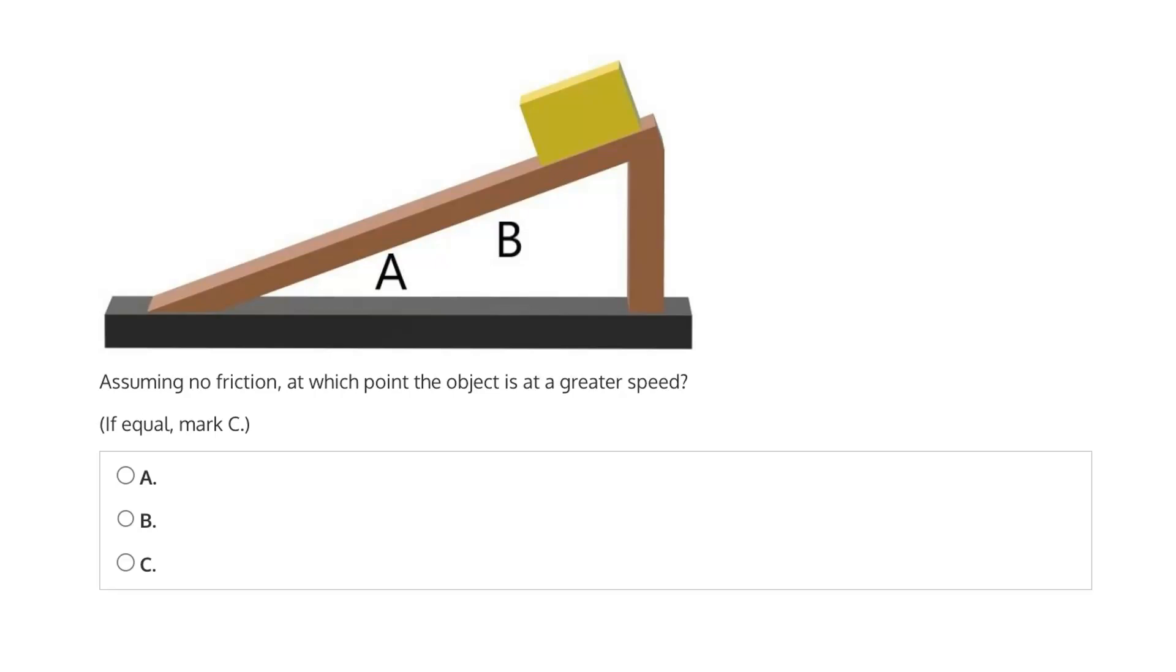So because we can assume no friction, we know there's only one force that's going to be acting on the object, which is the gravitational force G. So as soon as this is released, it will begin to accelerate down the plank towards the bottom, moving faster and faster as it does so.